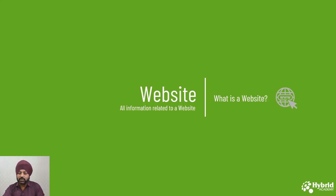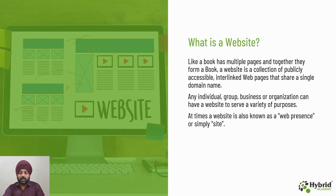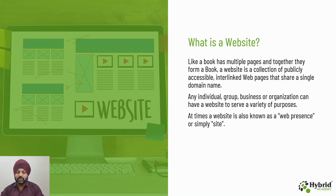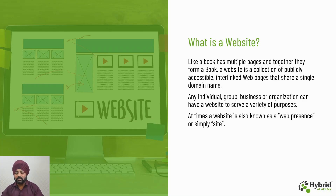What is a website? Like a book has multiple pages that together form a book, similarly a website is a collection of publicly accessible and interlinked web pages that share a single domain name. For example, www.yahoo.com and www.google.com are websites where multiple pages constitute a single website. Any individual, group, business, or organization can have a website to serve a variety of purposes. A website is also known as web presence or simply a site.